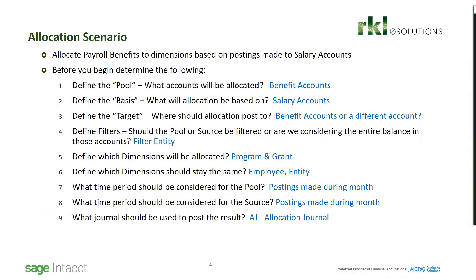Which dimensions should stay the same as the original entry and should not change? In this case, I'm going to put the employee and the entity. What is the time period? In this case, I'm going to look at the current month — all GL entries made in a particular month to the benefit account, and that same time period for the salary account. And where is the end result going to go? If you're using the Intact dynamic allocations, these always go into a user-defined book — they do not go into your core books. We have defined a user-defined journal called allocation journal.